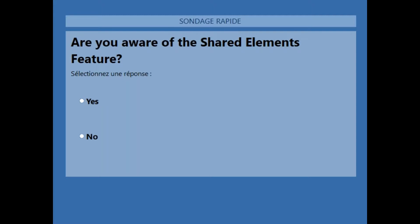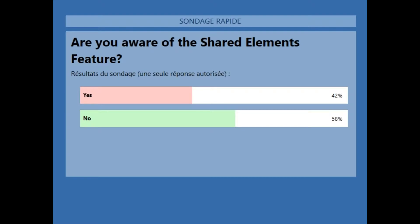Engagement is at about 74 and continuing to go up. The poll results show the feature awareness is more evenly split than expected. Pascal confirms this is typical — about half of customers know the feature and half don't. A second poll asks whether attendees understand the capabilities shared elements offer.